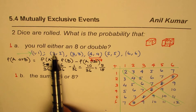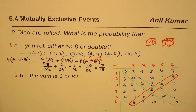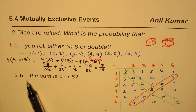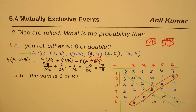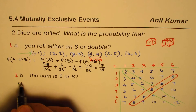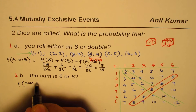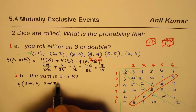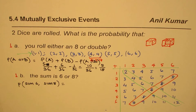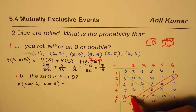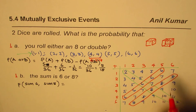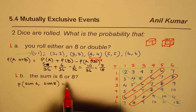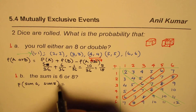That is the probability of rolling either an eight or a double. Now let's look at the second question: two dice are rolled, what is the probability that the sum is six or eight? Here we are asking for the probability of getting a sum of six or a sum of eight. These are two different sums, and therefore these are mutually exclusive events — nothing is common between them. We count five outcomes that give a sum of six.